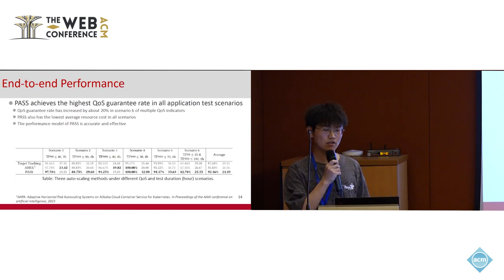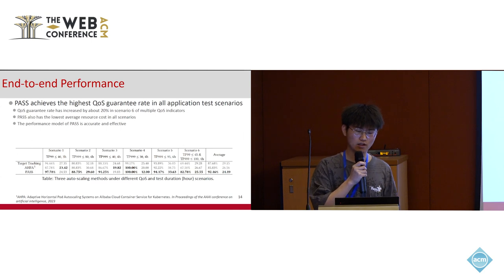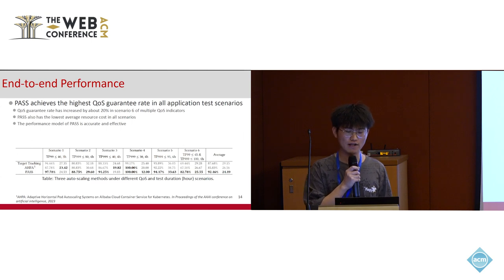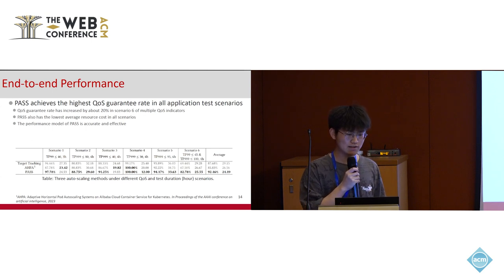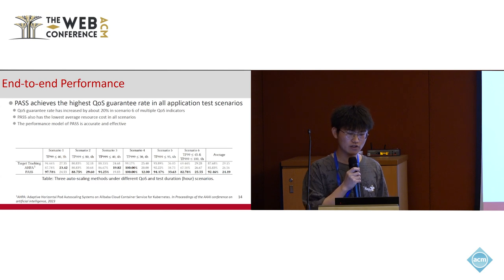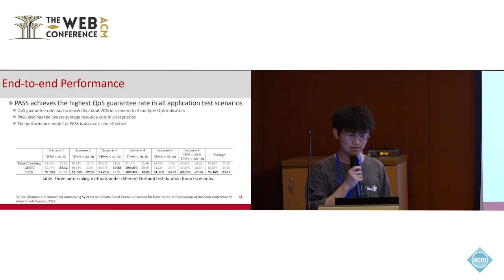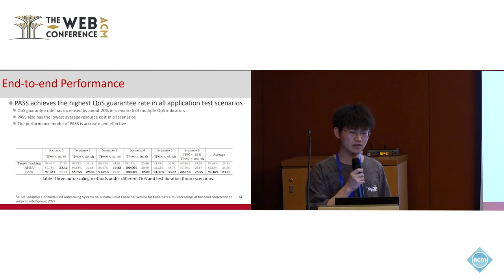We also conducted end-to-end tests on real services. This table presents the QoS guarantee rates and the resource costs of PaaS across six testing scenarios with different QoS metrics and durations. The baselines are target tracking and HPA, which is Alibaba's predictive auto-scaling system presented at AAAI 2023. The results show that PaaS has a significant advantage in QoS guarantee rate, especially in scenario six with multiple QoS indicators, where the QoS guarantee rate of PaaS increased by about 20% compared to the baselines. PaaS also has the lowest average resource cost in all scenarios, indicating that the performance model is accurate and effective.